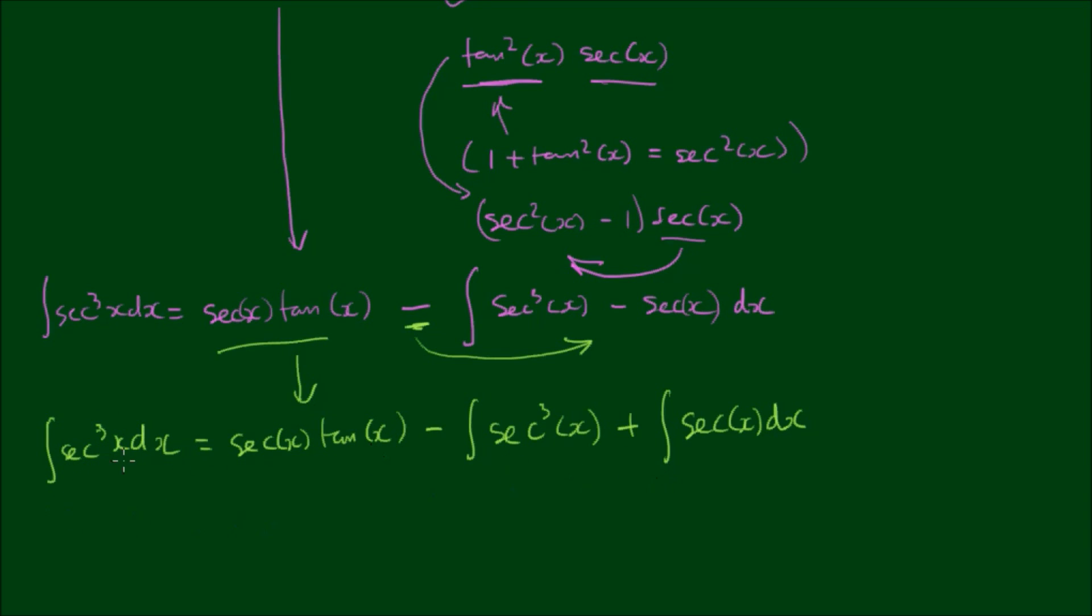So it looks like we've got a bit of a loop here. We've got the integral of sec³(x) is equal to sec tan minus the integral of itself plus the integral of sec(x). But this is okay because we can take this to the other side of the equation.